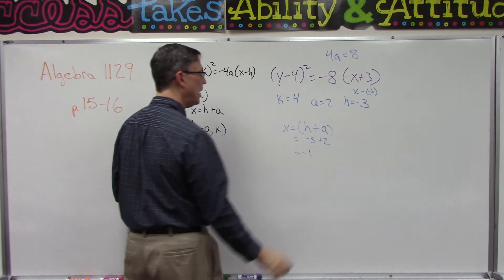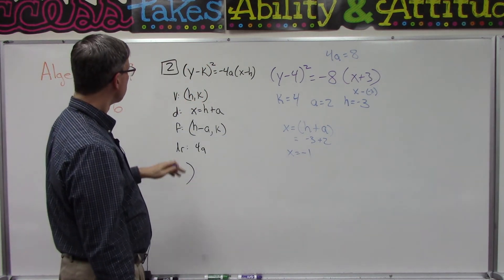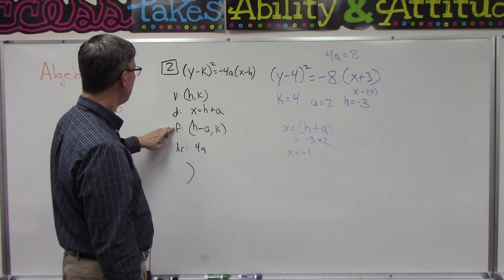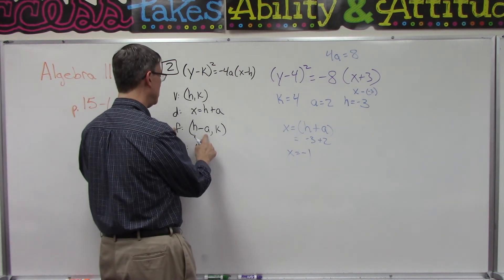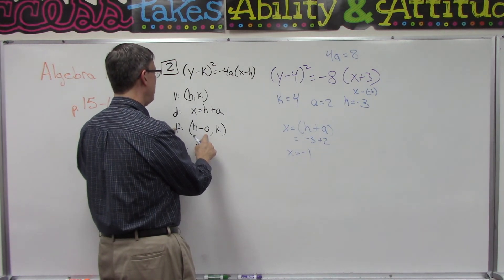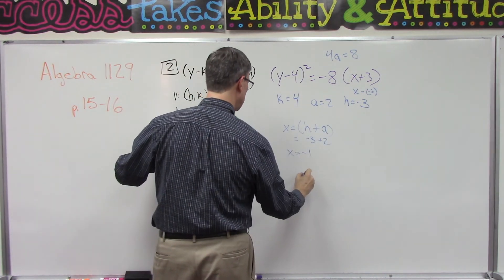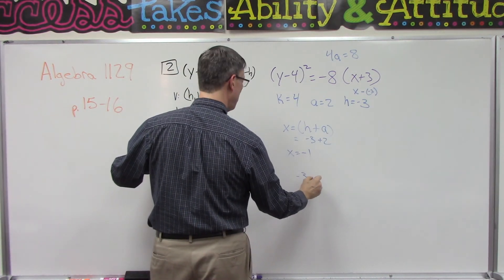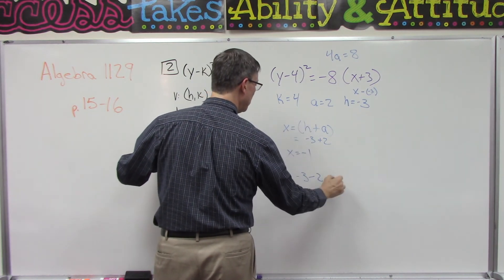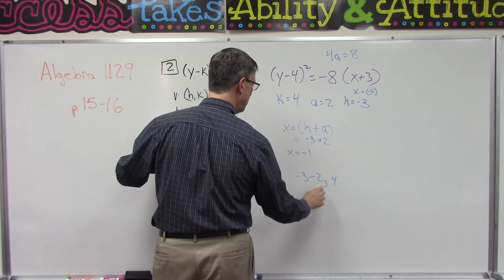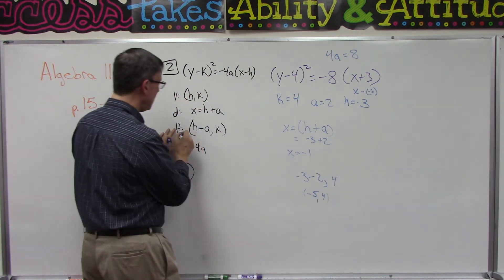The focus it says is H minus a, so H is negative 3 and now we're going to minus the a, so minus 2, comma, and then we plug in the K value which is the 4. Well, negative 3 minus 2 is negative 5. Alright, so now I have the focus.